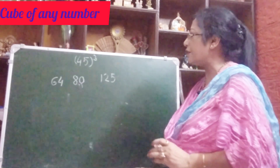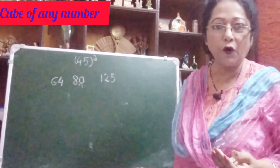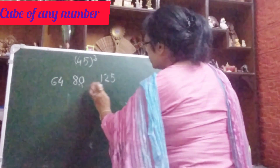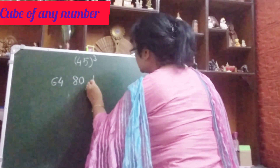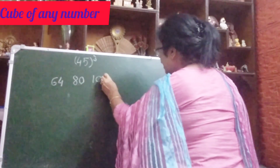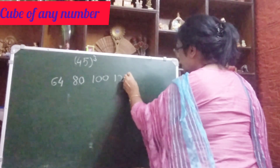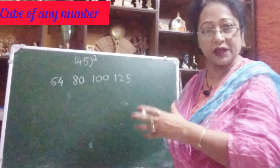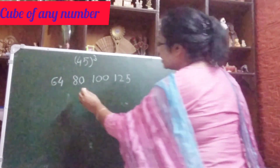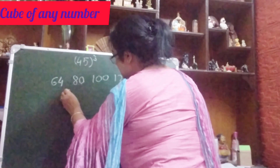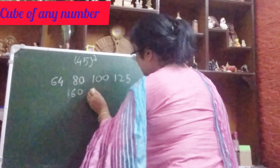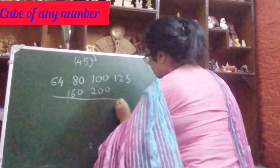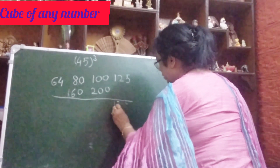Next is 5 squared multiplied by 4: 5×5=25, 25×4=100. So we will write here 100 and here 125. Next step — our second step is to double the middle two numbers. 80 doubled is 160, and 100 doubled is 200. Here it is nothing, so we will write 125.